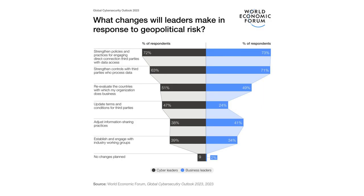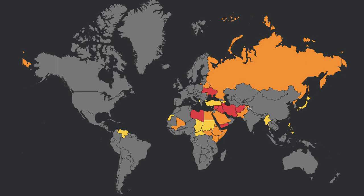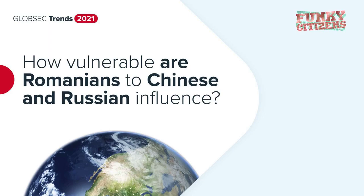Moreover, the collapse of the Soviet Union also left a void in terms of geopolitical stability. Conflicts and tensions have arisen in various regions, such as the ongoing conflict in Ukraine and the protracted conflicts in the Caucasus. The influence of Russia, the successor state to the Soviet Union, remains a significant factor in the region's politics.